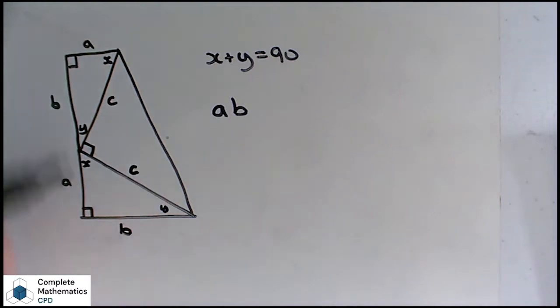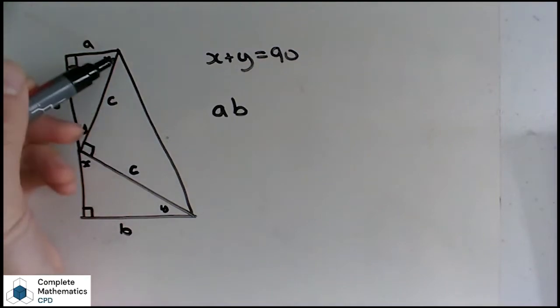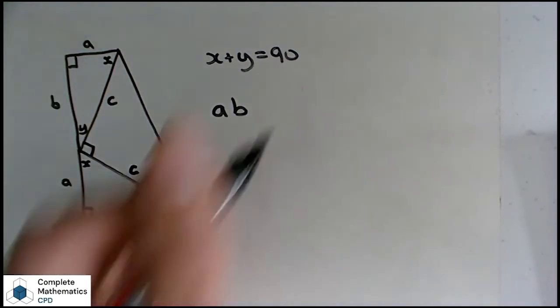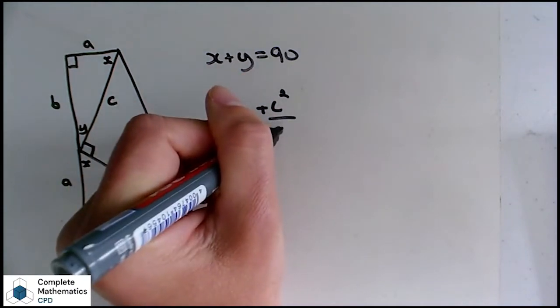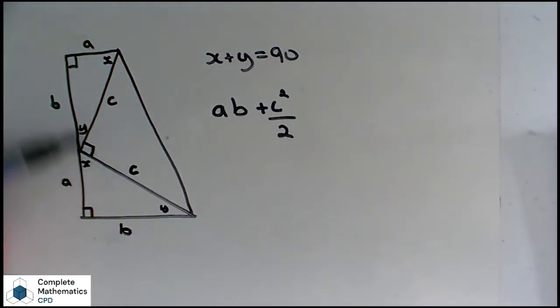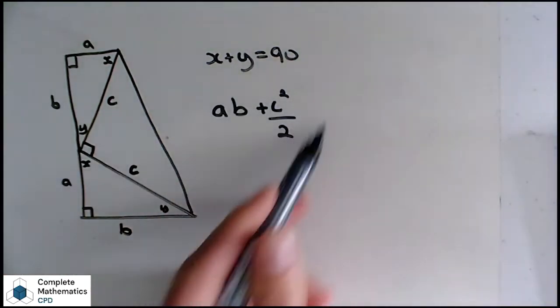And I'm also going to add to that the area of this third triangle here. So I've got C times C divided by 2, or C squared divided by 2. So the area of these three triangles is this expression here.